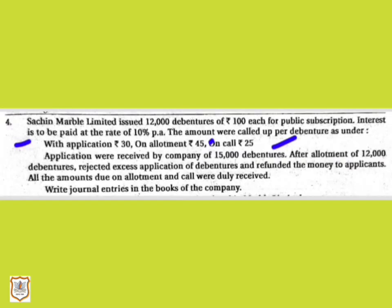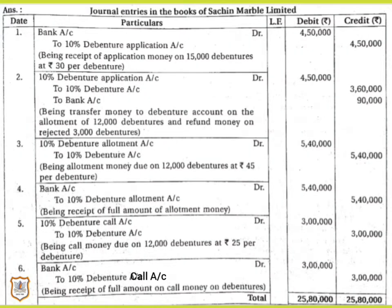Let us see how entries will be passed. The company issued 12,000 debentures at rupees 100 each for public subscription. The amounts called were: rupees 30 on application, rupees 45 on allotment, and rupees 25 on call. When added together — 30 plus 45 plus 25 — that comes to rupees 100, which is the face value. As we already know the journal entries for shares, here we will only replace the word 'share' with '10% debenture'.